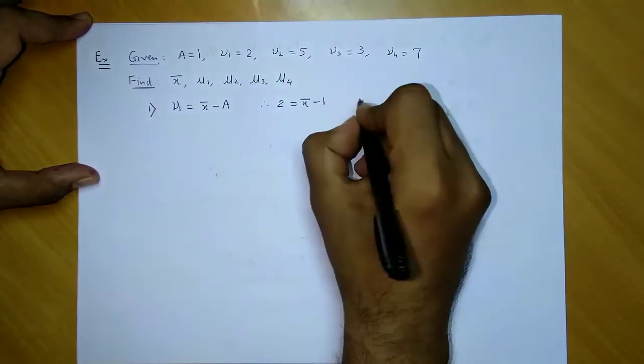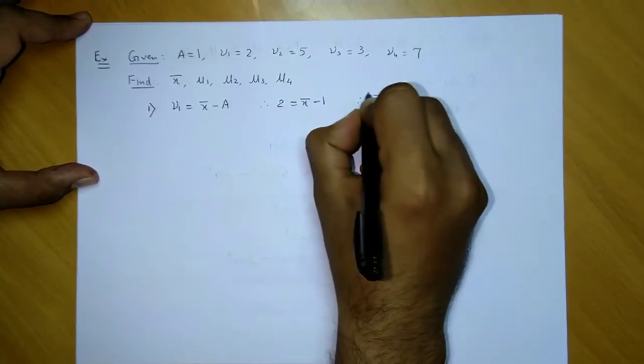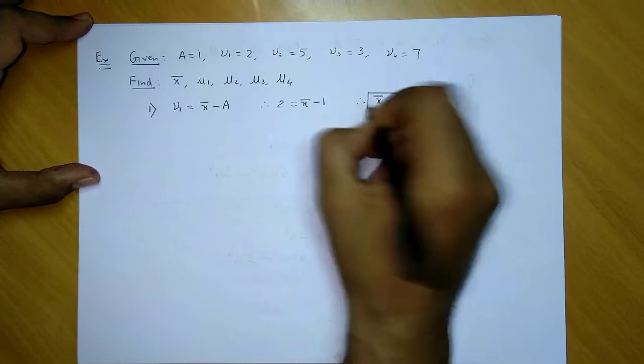So 2 = x̄ - 1, from this you'll get the value of x̄. So x̄, that is mean, is equal to 3.